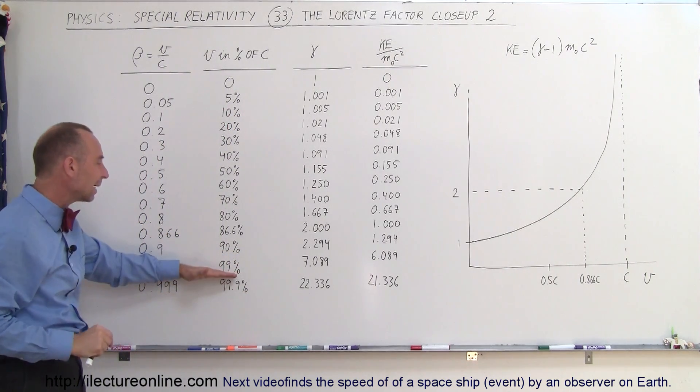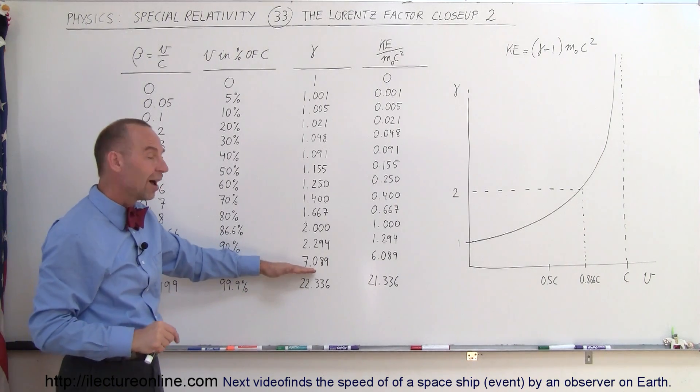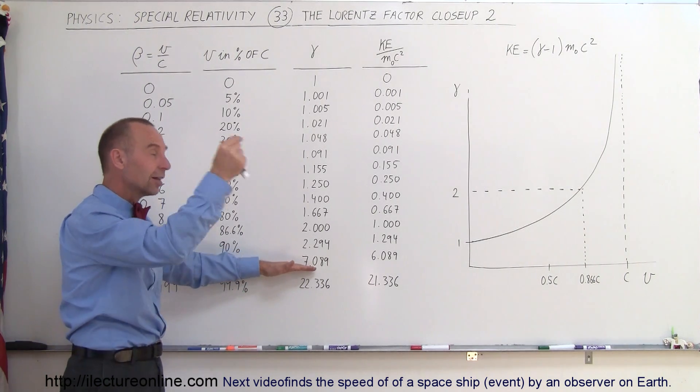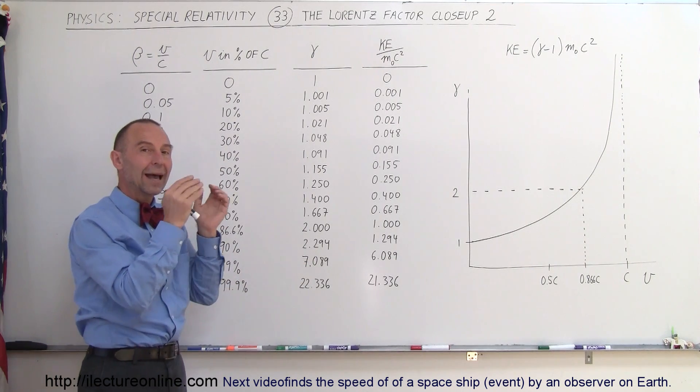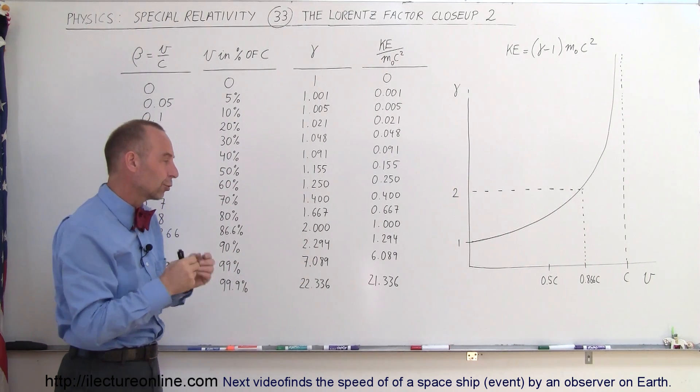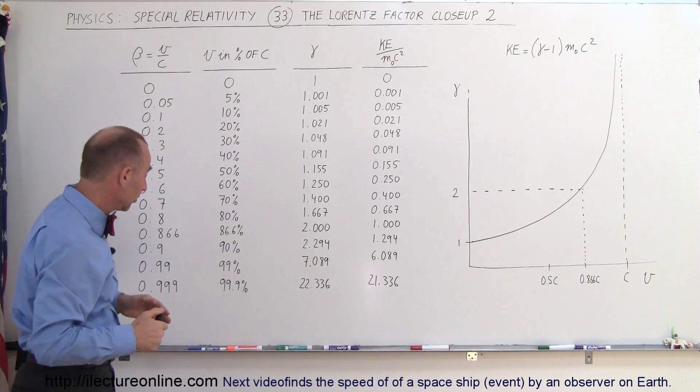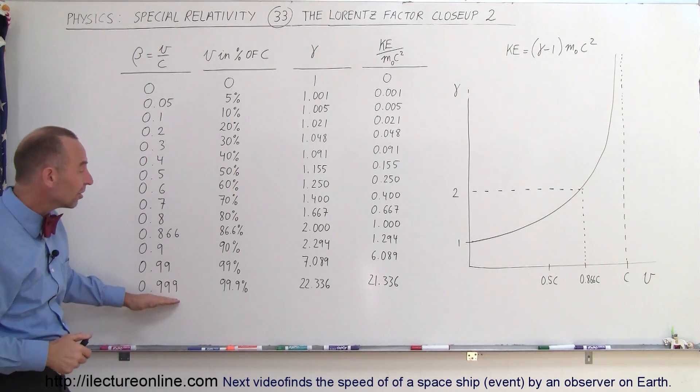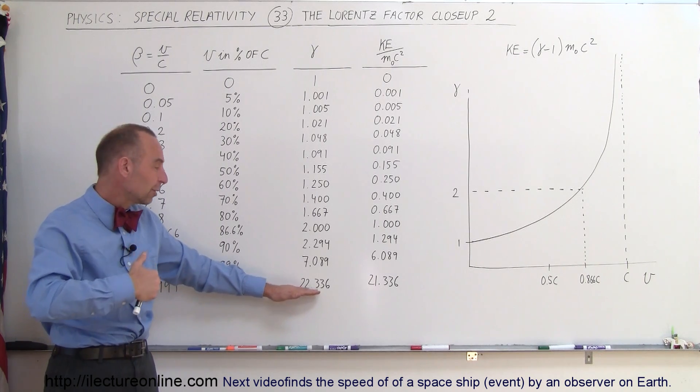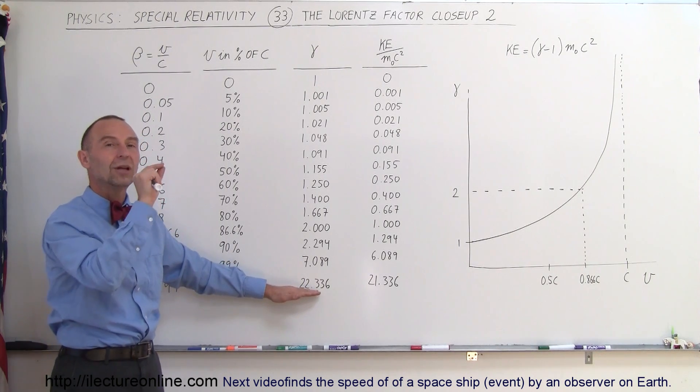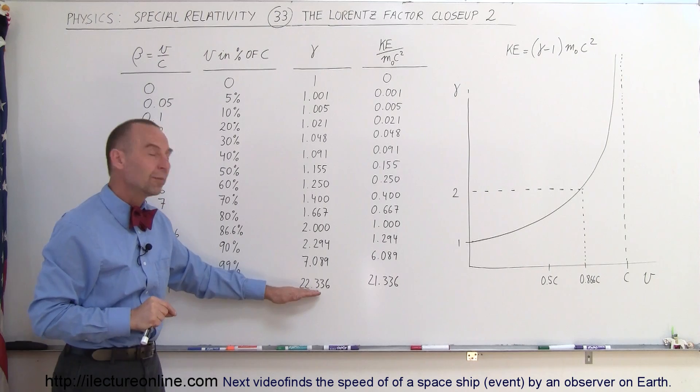let's say the event is moving at 99% of the speed of light. The time you'll measure for an event on that object will be 7 times the time you measure when you're at the same location as the moving object. If the event is moving at 99.9% of the speed of light, then the time you measure at rest will be 22 times the time someone moving with the event measures.